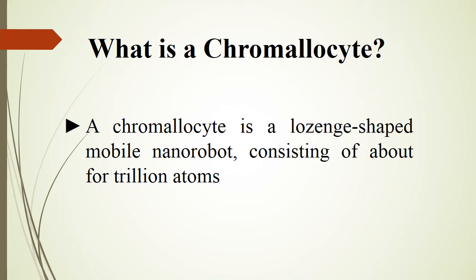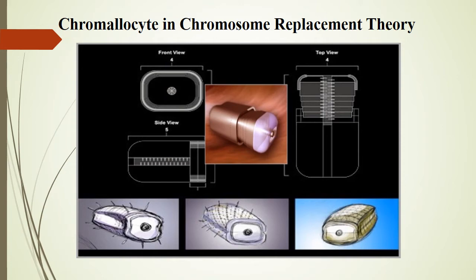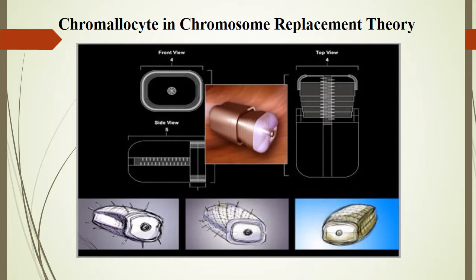What are chromalocytes? Chromalocytes are basically long-shaped mobile robots consisting of about a trillion atoms. They are just like a chromosome of the body and can replace chromosomes. Imagine your chromosome replaced by a chromalocyte. As seen in the figure, the diagram shows the similarity between chromosomes and chromalocytes. Chromosomes are the building blocks of DNA. Many incurable genetic diseases, including mental retardation, can be cured by chromalocytes.